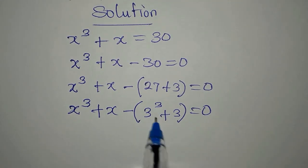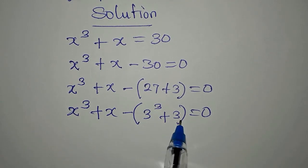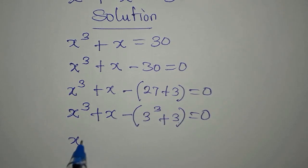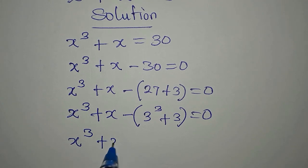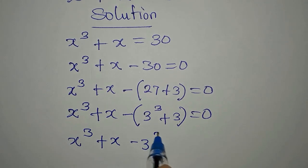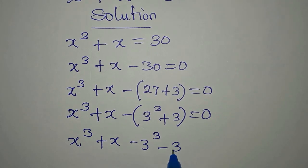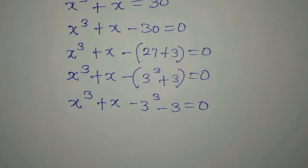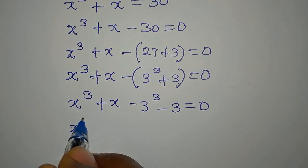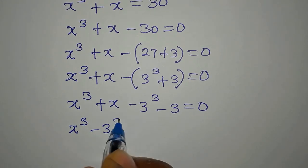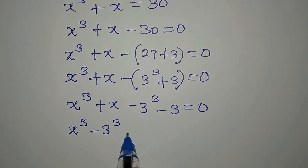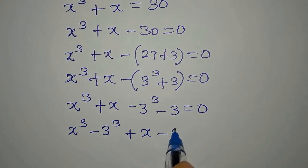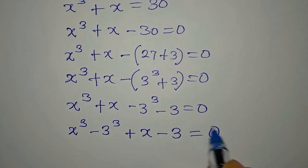You can see that this matches the pattern. We open this bracket: x to the power of 3 plus x minus 3 to the power of 3 minus 3 equals zero. Now let's regroup: x to the power of 3 minus 3 to the power of 3, then plus x minus 3, equals zero.